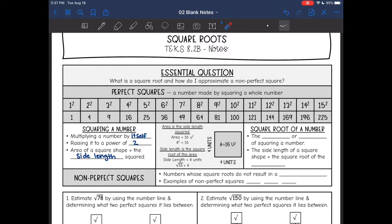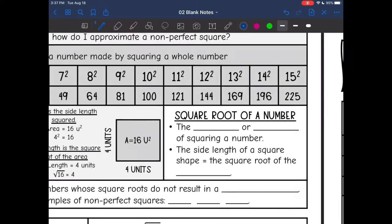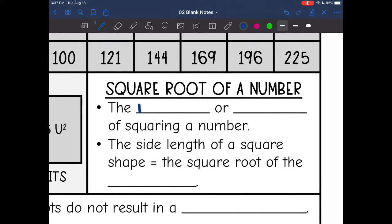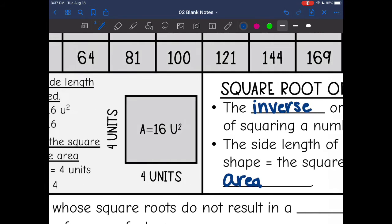So let's talk about square roots a little bit more now. Square root of a number is just doing the inverse or the opposite of squaring a number. The side length of a square shape is equivalent to the square root of the area. So let's look at that here.